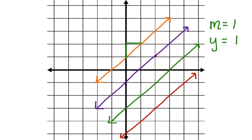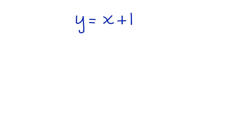Now we can write our equation. Let's write it in slope-intercept form. y equals x plus one. This is the equation for the orange line.